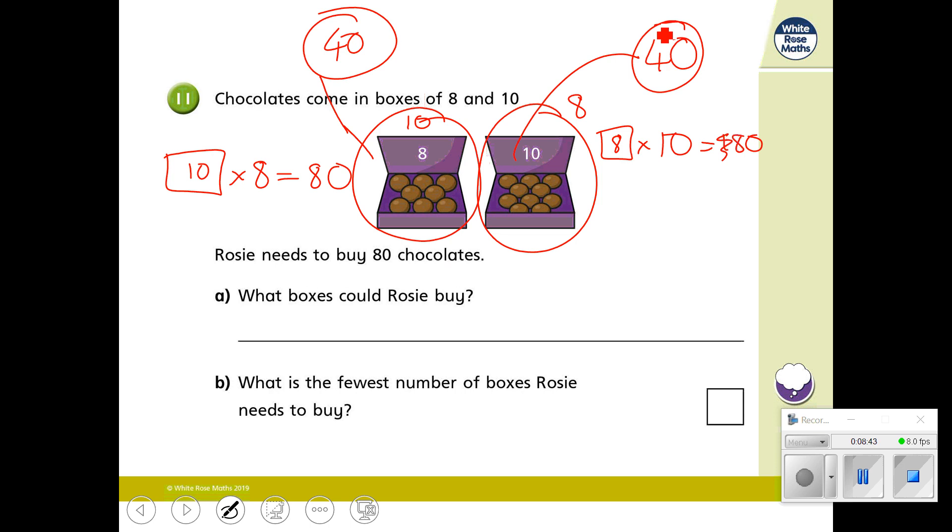So, what times 8 makes 40? That's right, it's 5. So I can have 5 boxes here. What times 10 makes 40? So I can have 4 boxes there. So I could actually have 5 boxes of 8 which makes 40, 4 boxes of 10 which makes 40, and then I'm now looking at 80 chocolates.